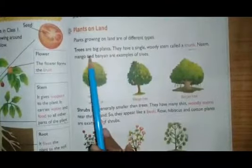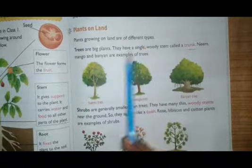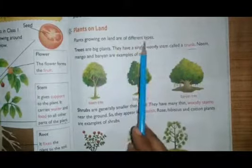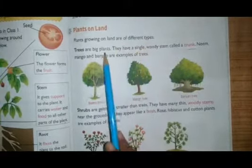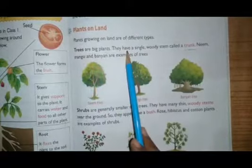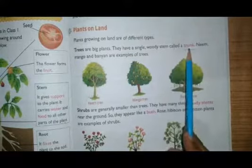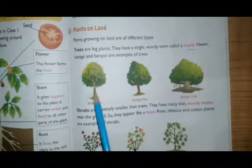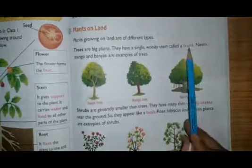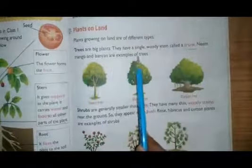Plants on land: trees are big plants. They have a single woody stem called a trunk. Neem, mango, and banana are examples of trees.